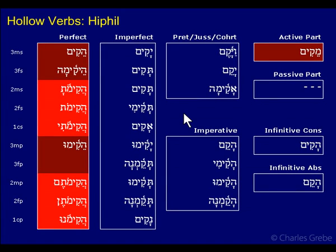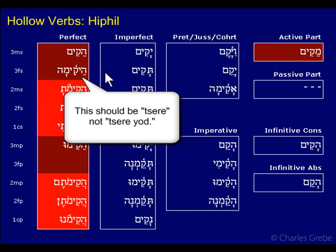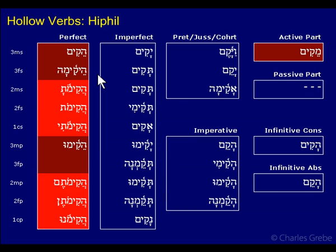Here we have the Hiphil of kum, and what we see is that it divides into two groups, in a similar way that the Nifal divides into two groups. It divides because the prefix vowel is a tzere — tzere for the perfect and the participle. So that's something to note, something we may not have anticipated.